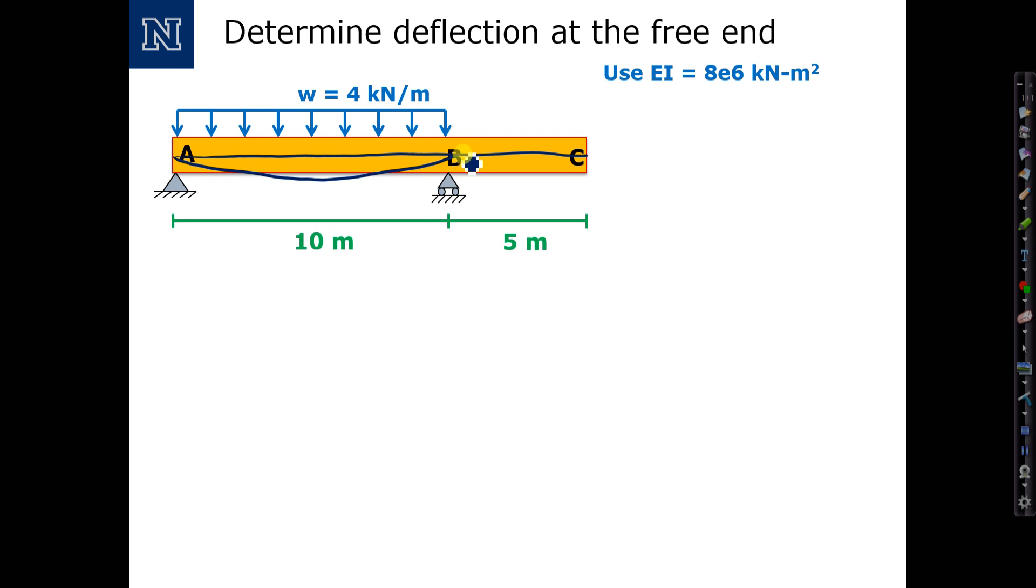The overhang doesn't have any load on it, so this part between B and C is just going to be a rigid extension of the rotation at point B.